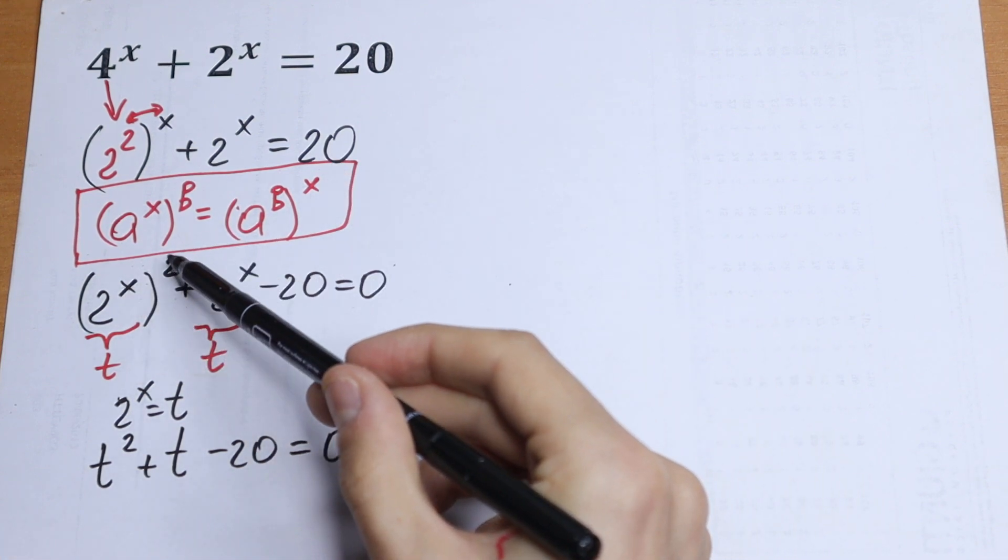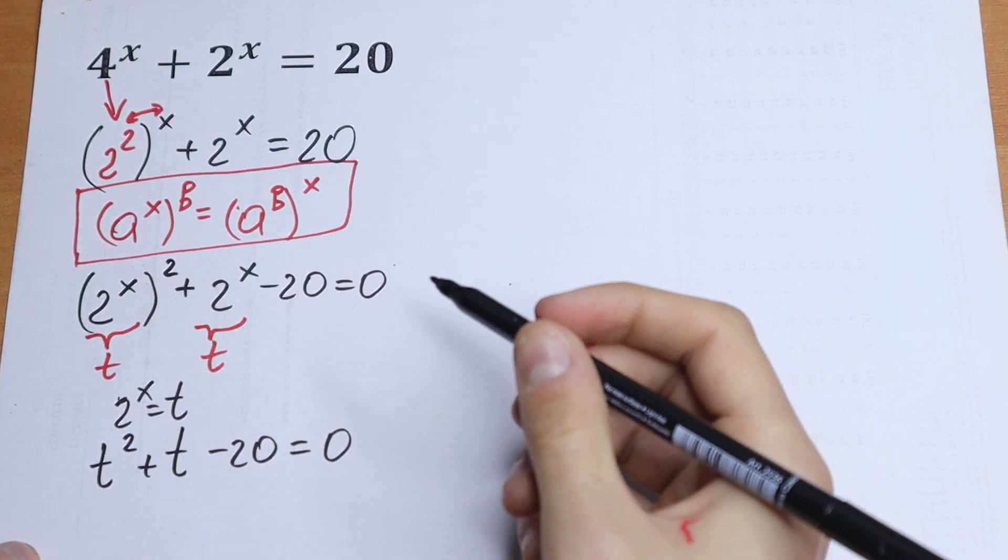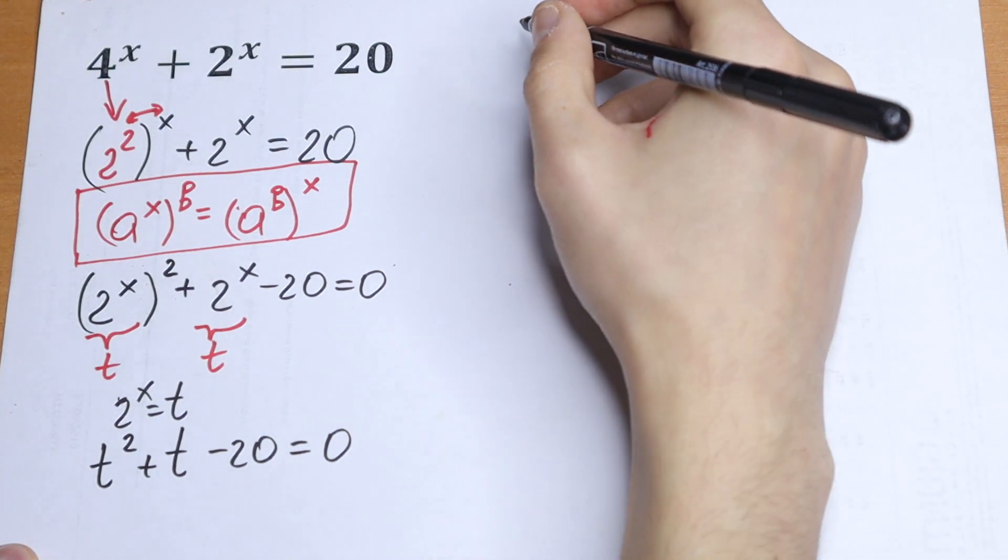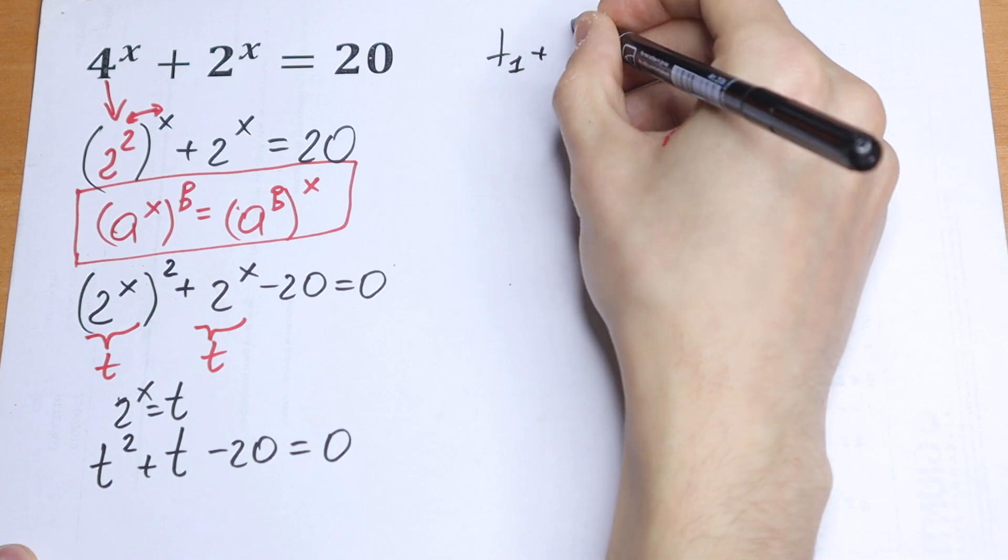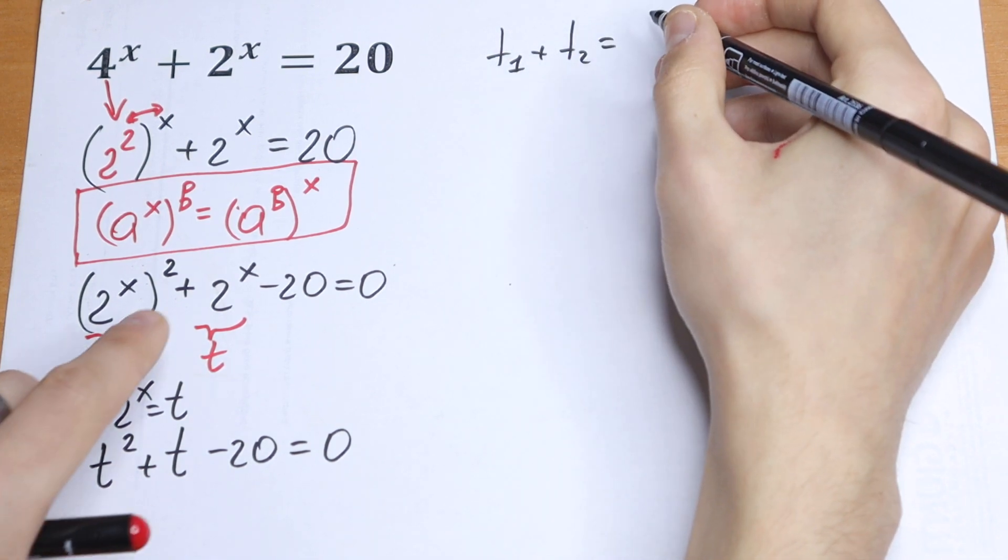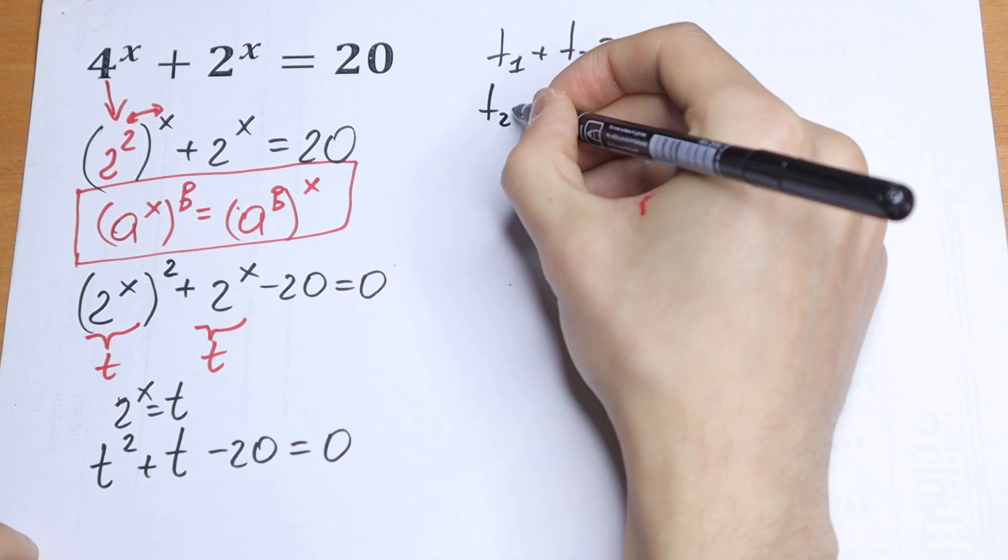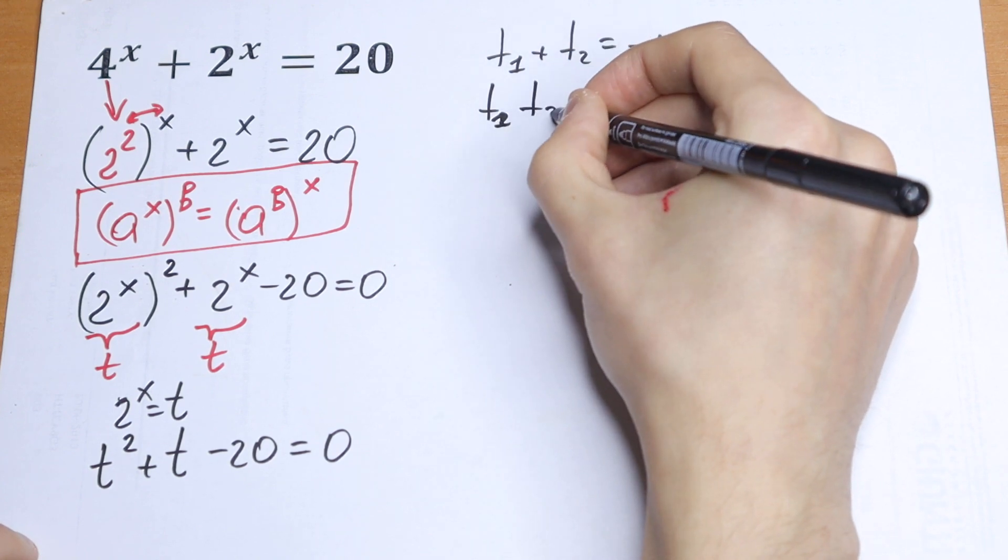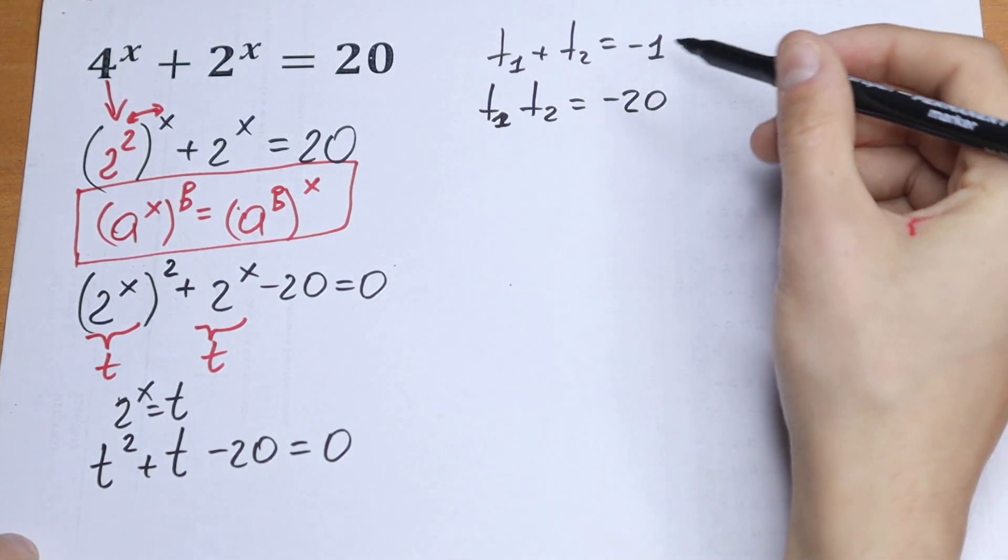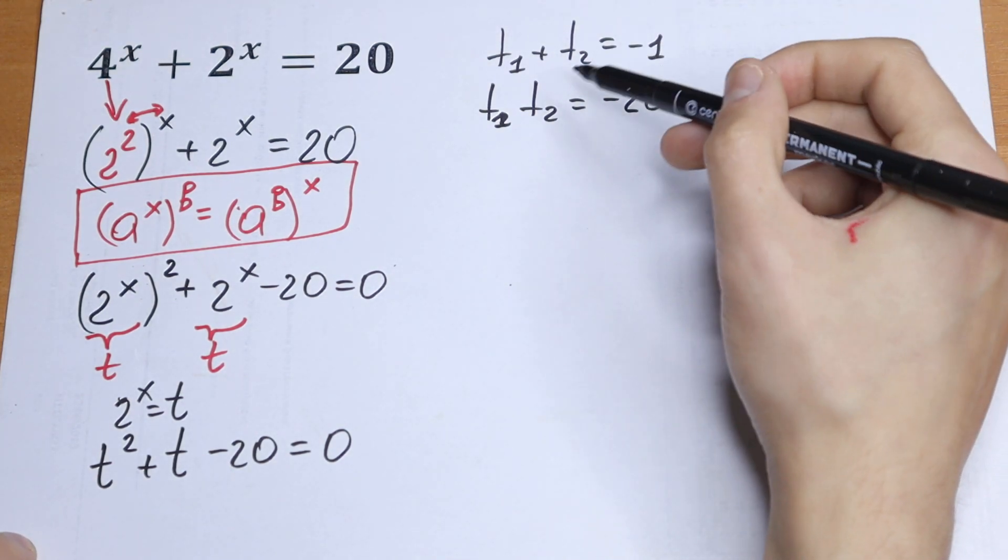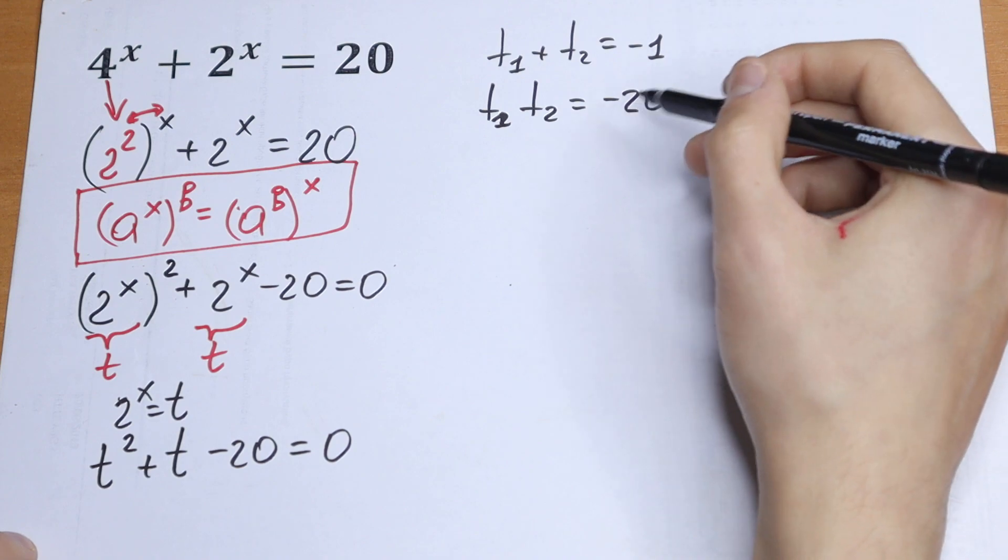From here, t squared, t, and minus 20. How can we solve this? I use a little bit of a theorem right here. So the sum will be equal to minus 1 and the product will be equal to minus 20. So let's try to find roots with sum equal to minus 1 and product equal to minus 20.